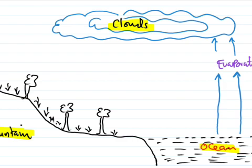After evaporation, water vapor goes up to form clouds. The process that occurs to form clouds is called condensation. Condensation converts water in the form of gas back, and this is linked to evaporation.